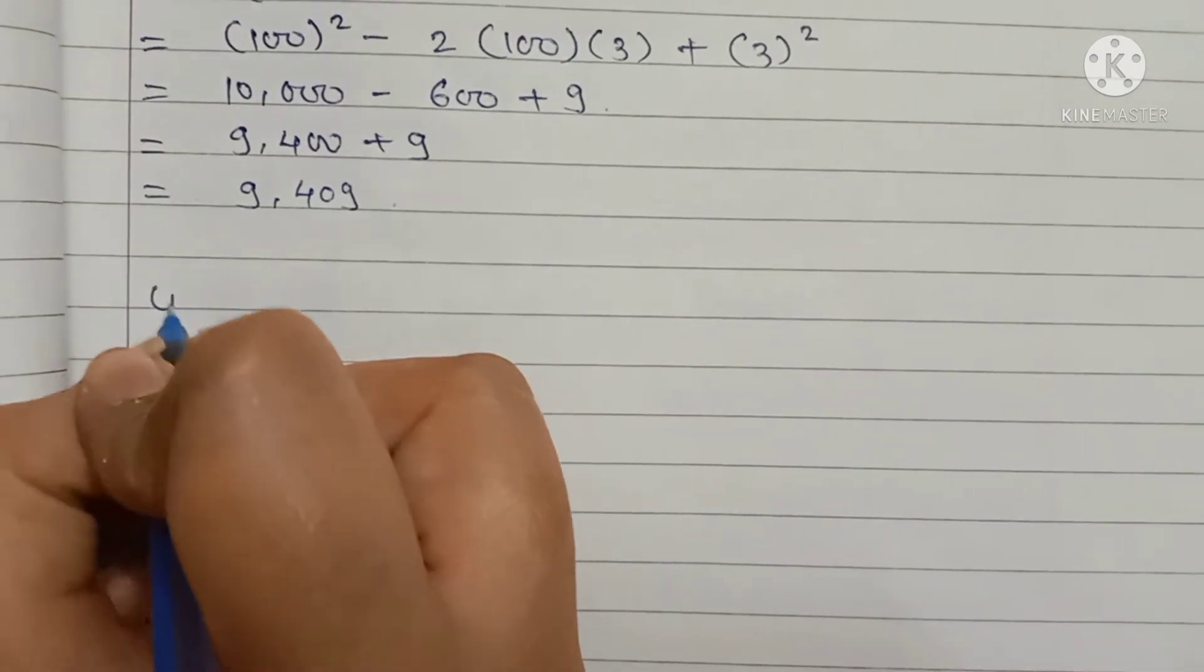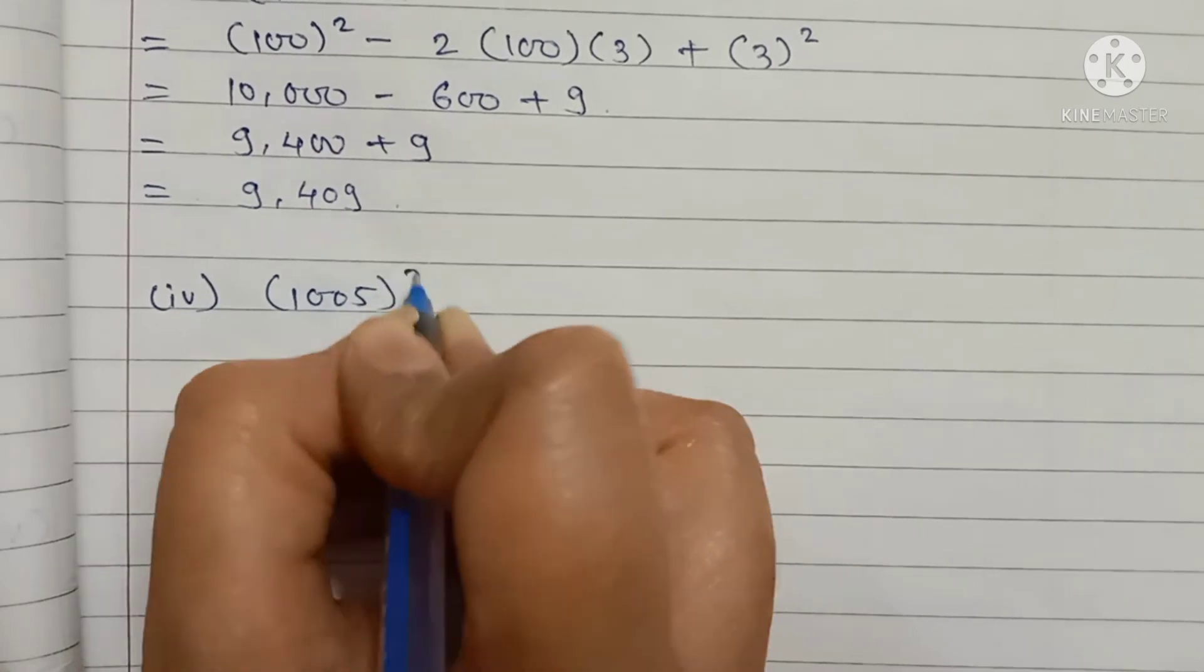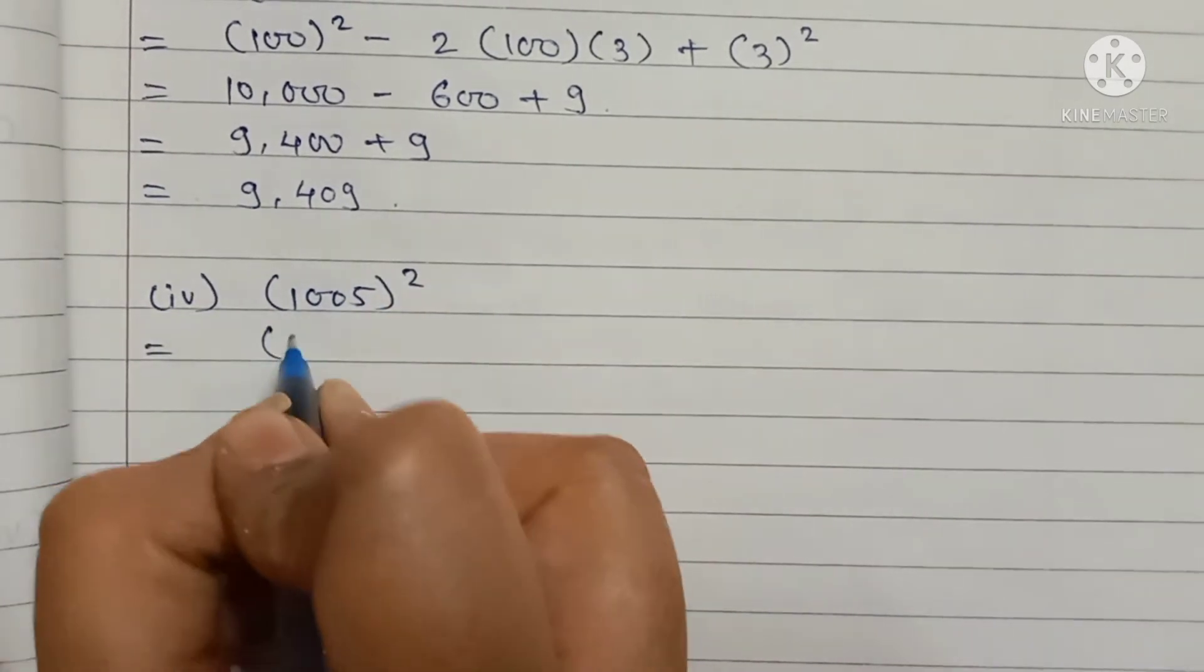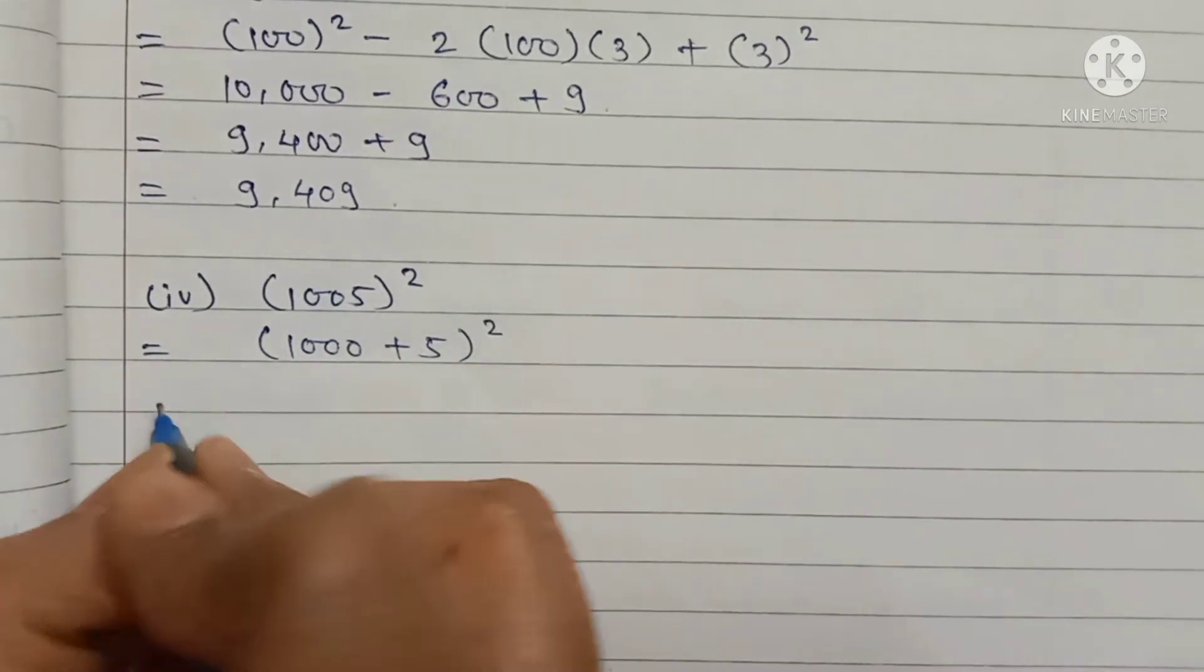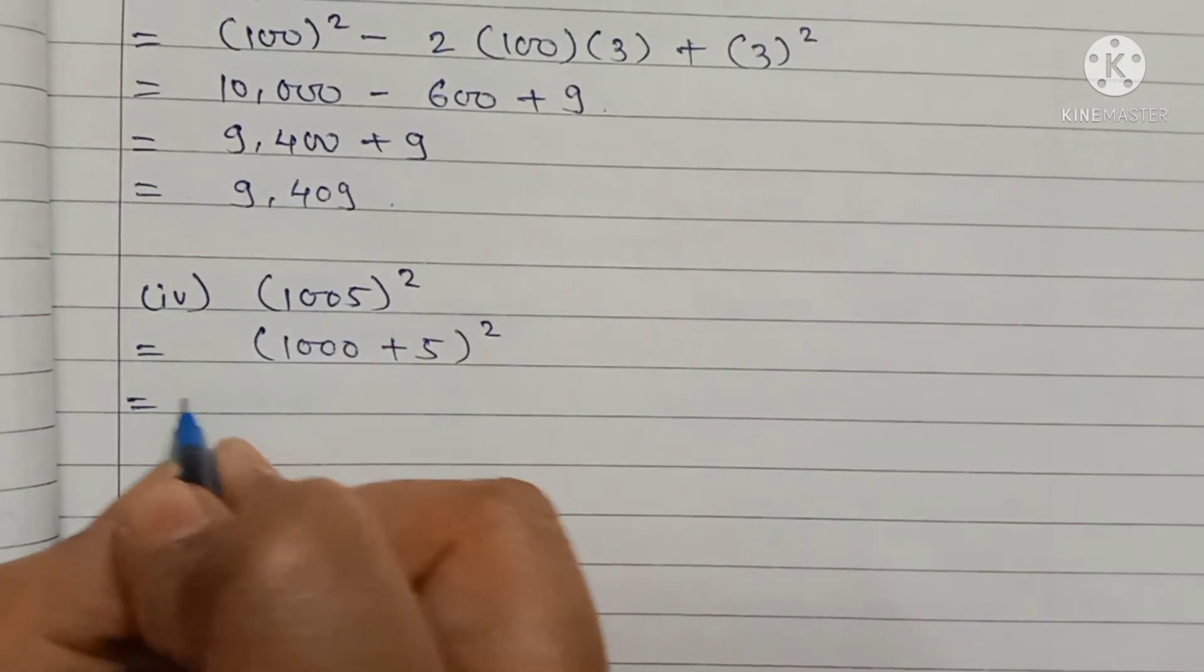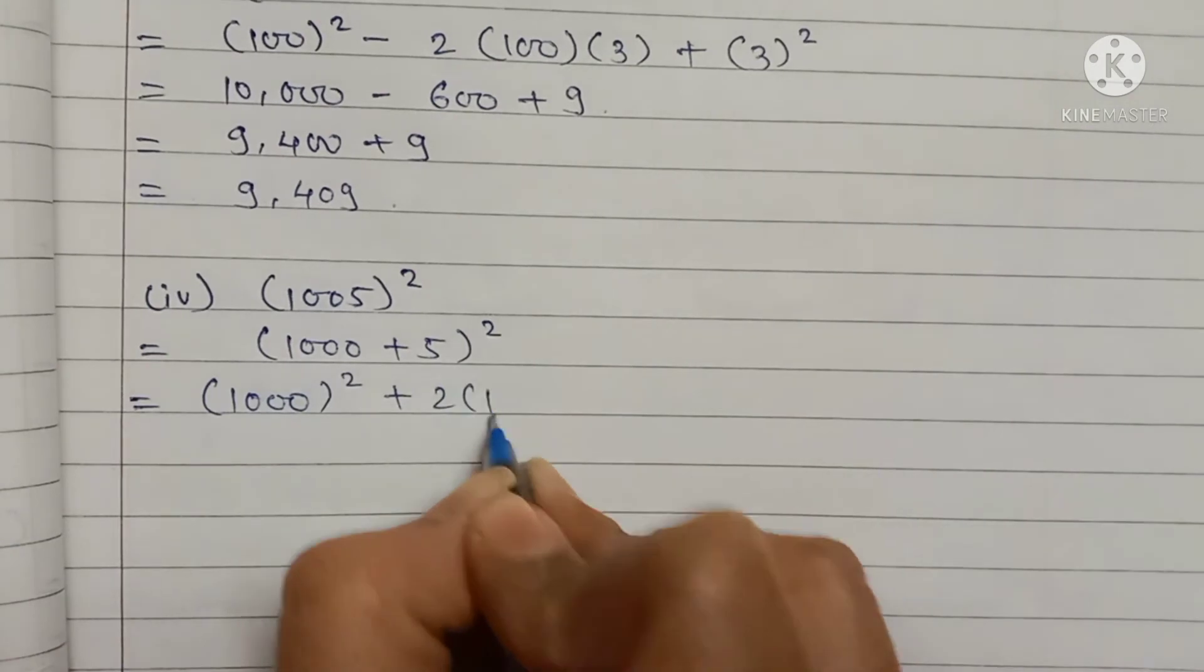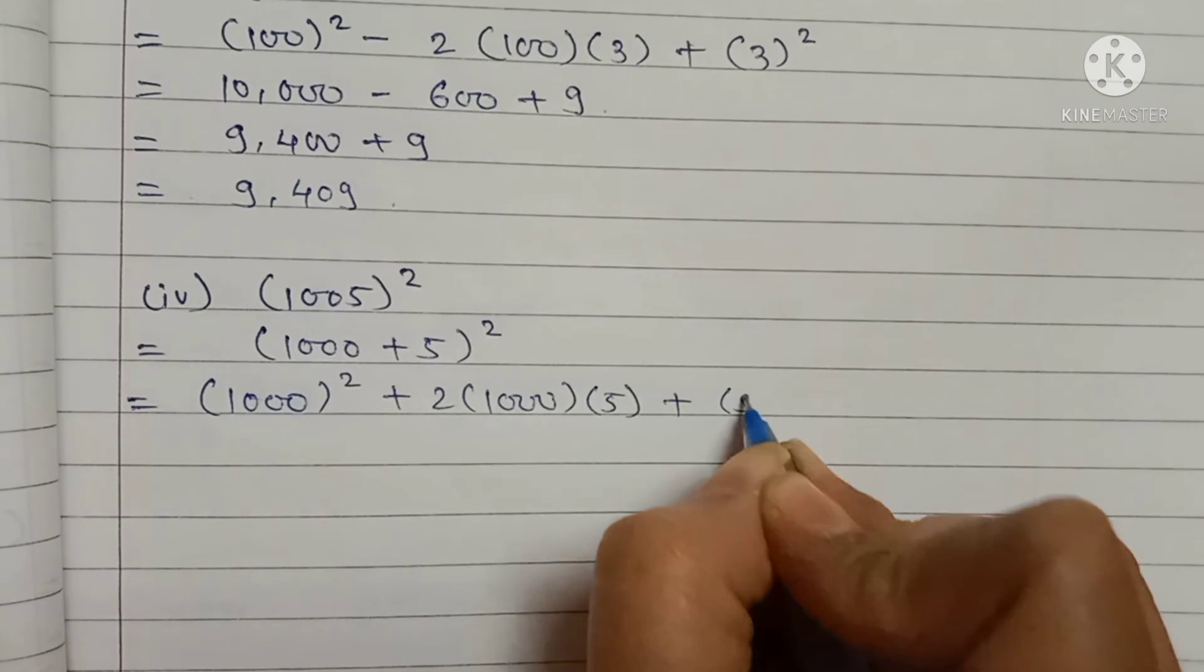Last question: 1005 squared. How to write 1005? 1000 plus 5 bracket square. Now here use A plus B bracket square formula. A² means 1000² plus 2AB means 2 into 1000 into 5 plus B² means 5².